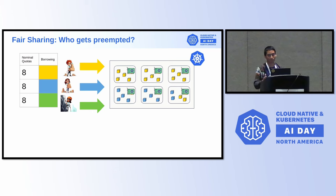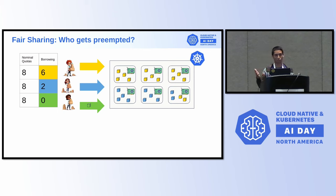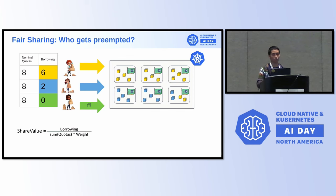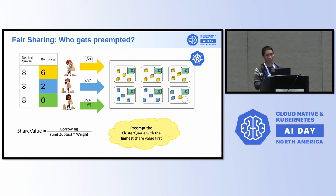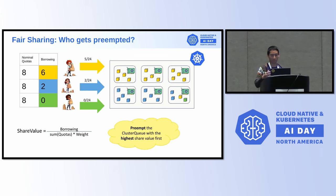Now, let's assume the cluster is full. Bob is borrowing six, Alice is borrowing two, and Chelsea comes back from vacation with a job to run. She needs to reclaim her quota — but who should be preempted? We apply the opposite rule: preempt the cluster queue with the highest shared value first. In this case, Bob has the highest value, so Bob's job gets targeted for preemption, freeing space so Chelsea can run her job. These simple rules implement fair sharing in a cluster with preemptions.